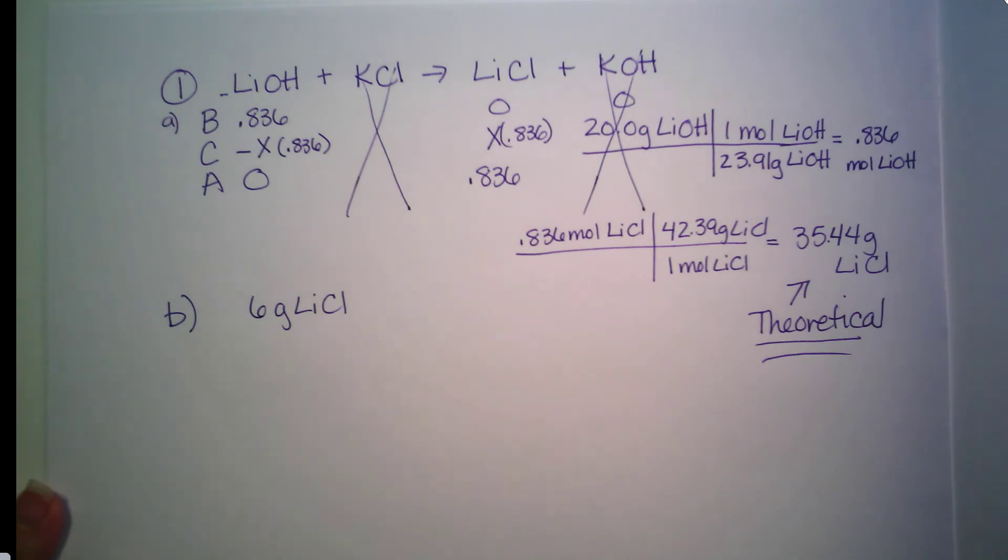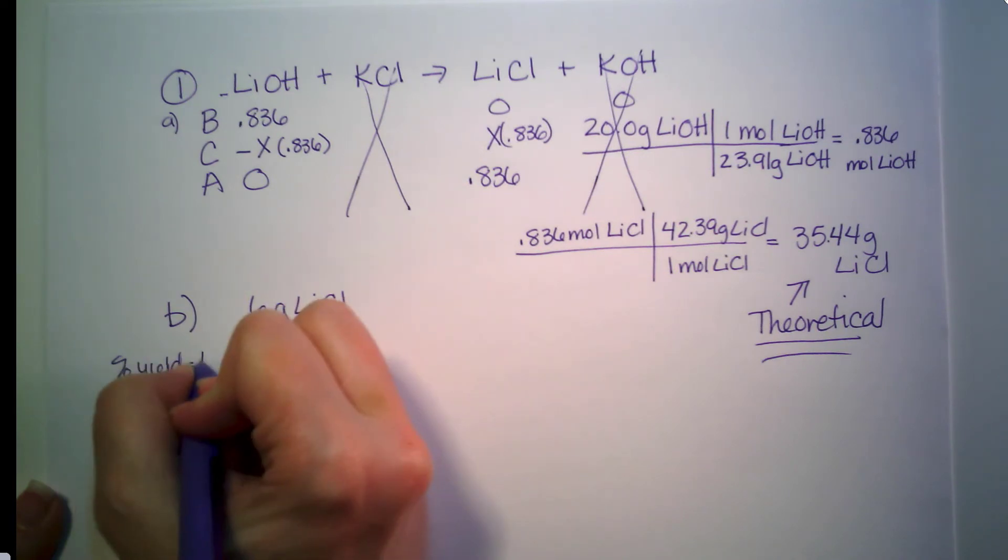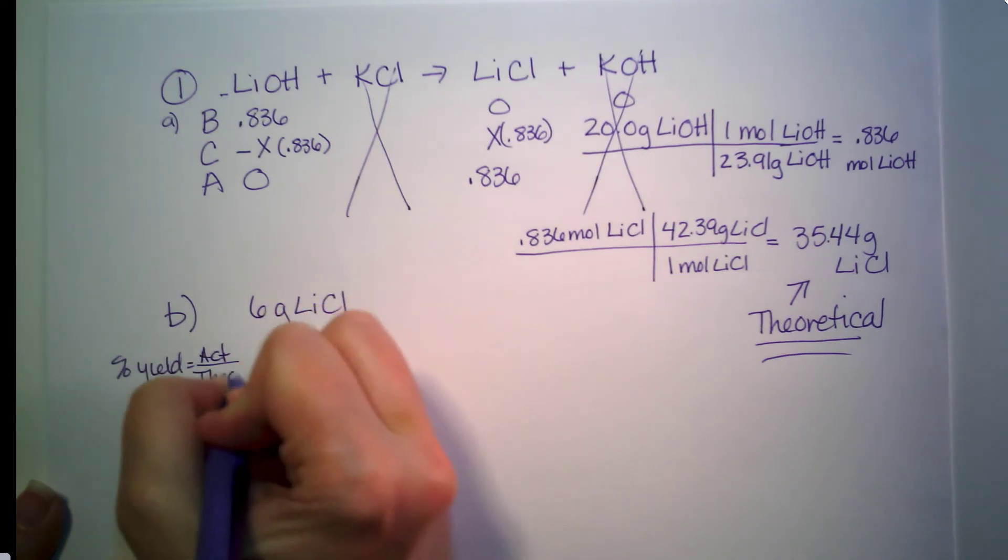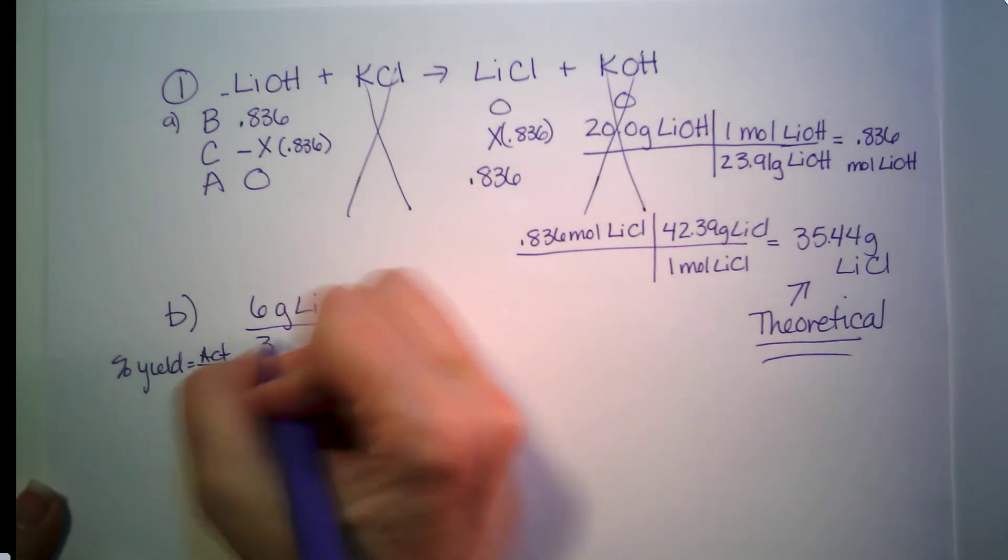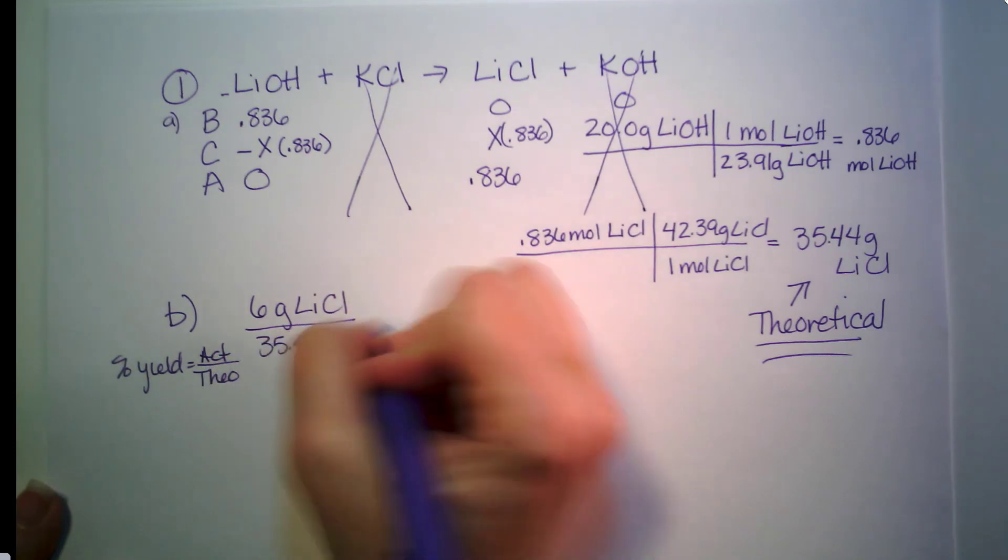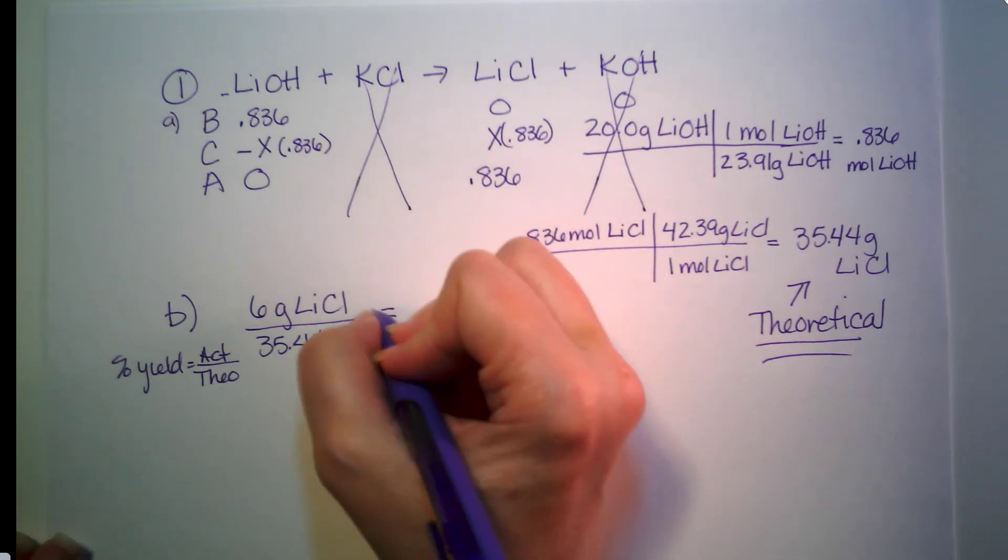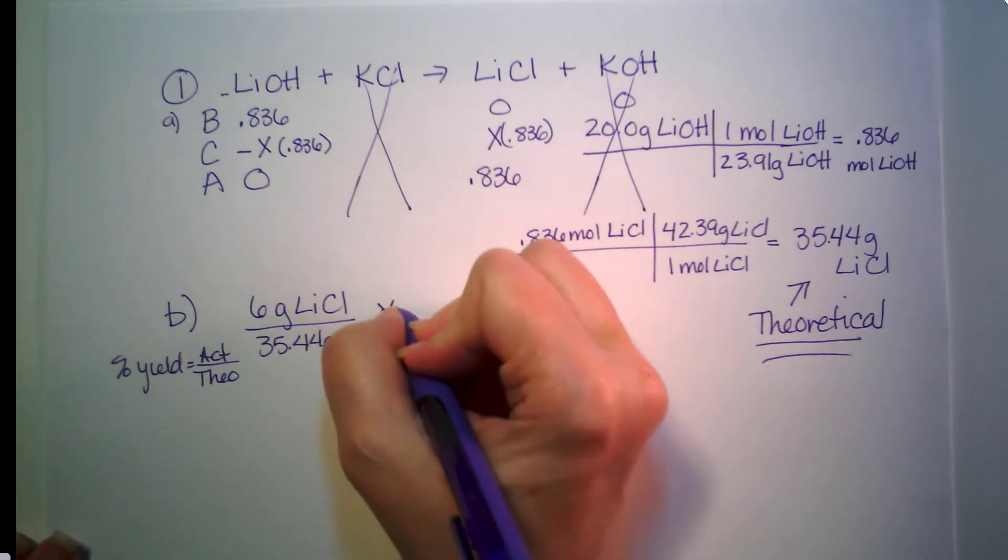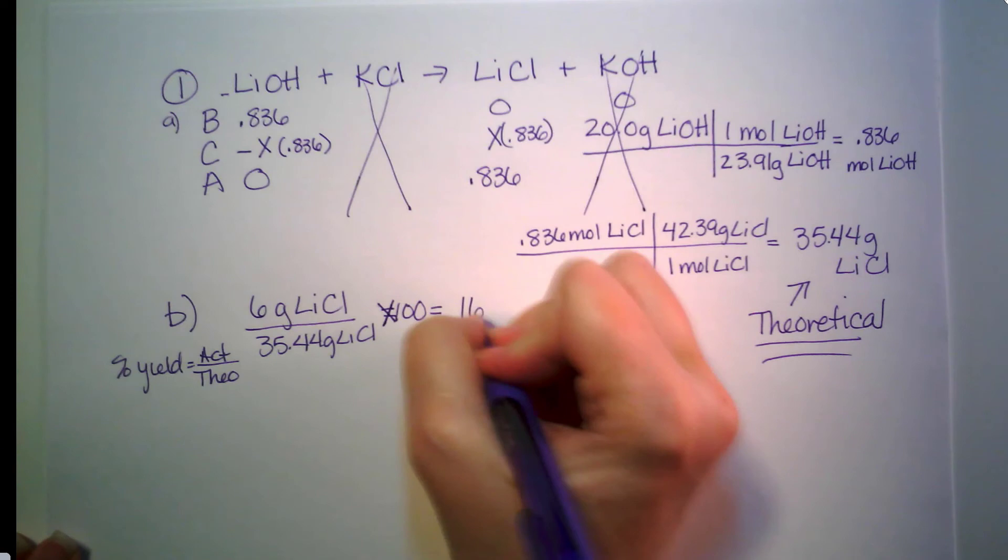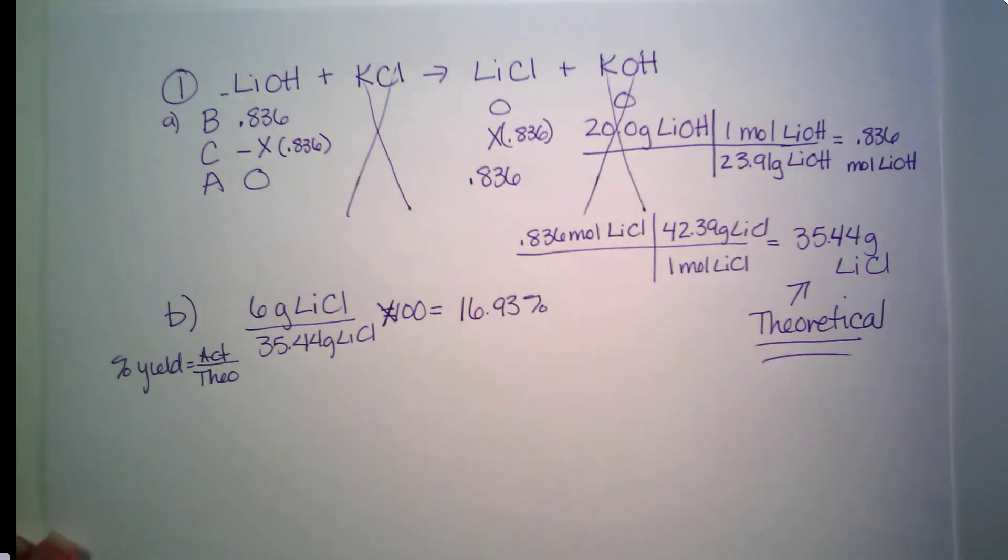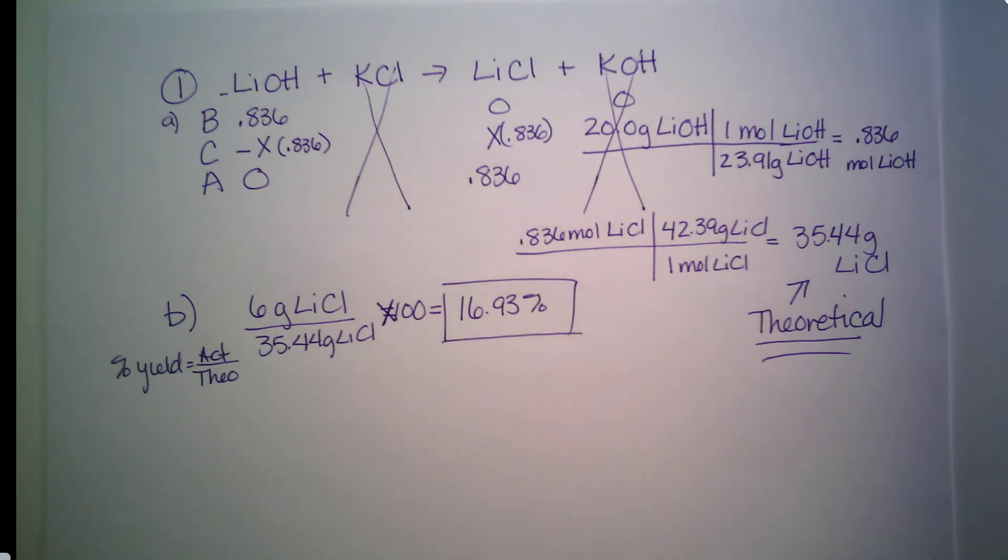Our formula is percent yield is equal to actual over theoretical. So I've got my actual over my theoretical, times 100, and that is going to give me 16.93 percent. That's not very good percent yield. That is the correct answer, though.